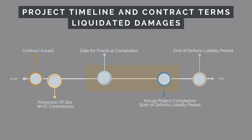During the period between the original contract date for practical completion and the actual project completion, liquidated damages will be applied. These are damages in a dollar figure per day — say $1,500 per day the contractor is charged for every day they are late in finishing the project. As you can imagine, liquidated damages are costly and will always result in conflict between the contractor and the principal.